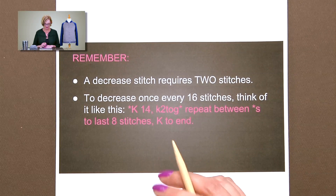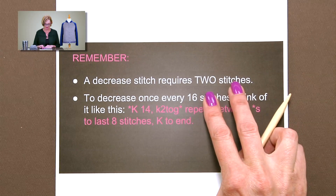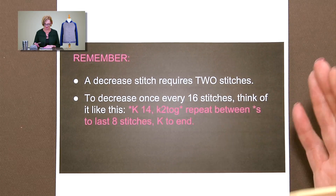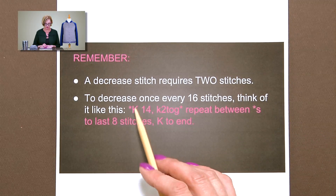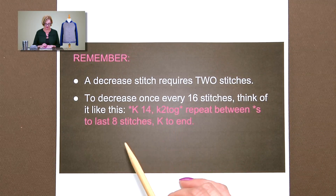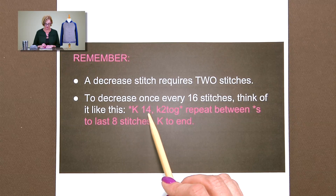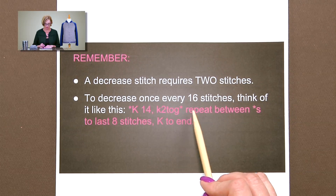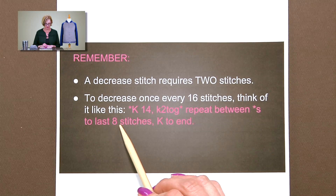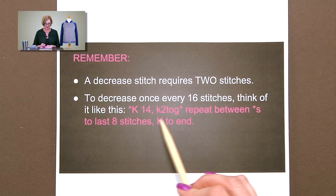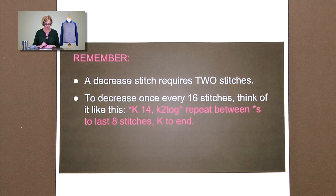Something important to remember: a decrease requires two stitches — knit two together or SSK. If it's a one-stitch decrease, it requires two stitches. So think about the solution we came up with and how you're going to work that row to decrease once every 16 stitches. Think of it like this: knit 14, knit two together — repeat that all the way across the row to the last 8 stitches, and knit to end.